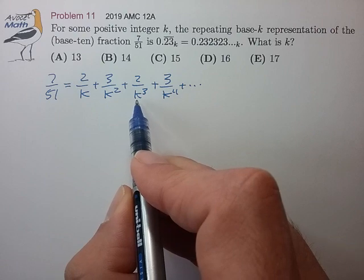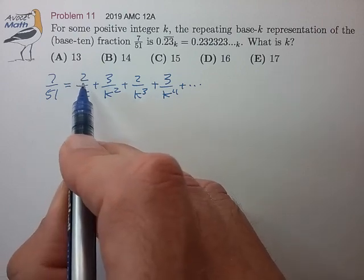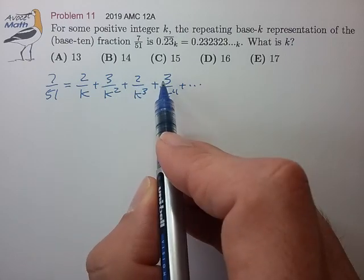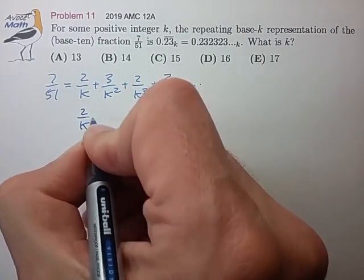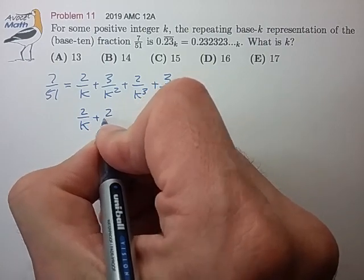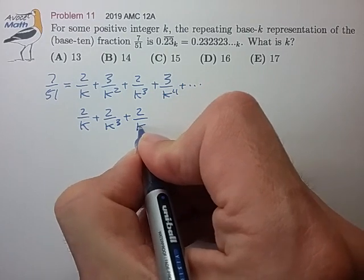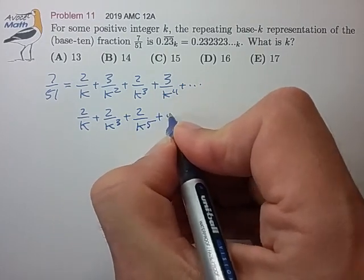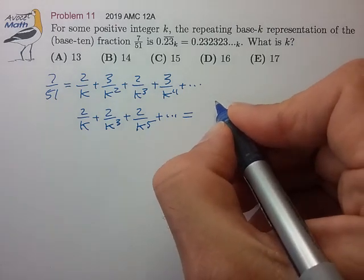So 2/k, 3/k squared, and so on. Let's break up this series into its two subcomponents, the one with coefficient 2 and the one with coefficient 3. The one with coefficient 2 is 2/k, k cubed, k to the fifth, and we'll use the formula for an infinite geometric series.